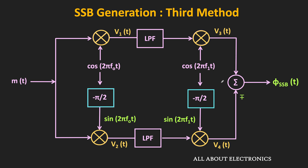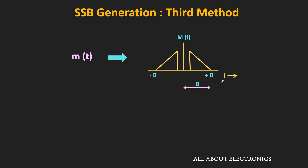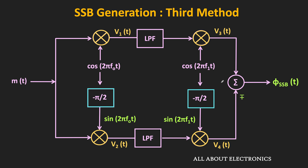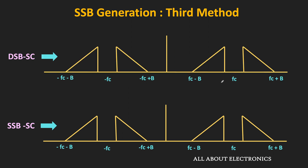Now let us understand how we can generate the SSB-SC signal with this third method. Let's say we have some message signal m(t), and the maximum signal frequency in the message signal is equal to B. Then the cutoff frequency of the low pass filter should be equal to B/2, and the carrier frequency F0 should also be equal to B/2. When the message signal m(t) is multiplied with the carrier signal Fc, the entire spectrum gets shifted by ±Fc — that is the spectrum of the DSB-SC signal — and whenever one of the sidebands is suppressed, we get the SSB signal.